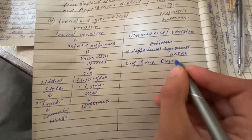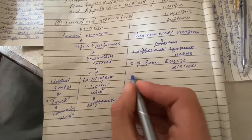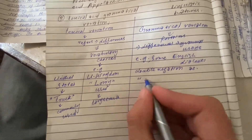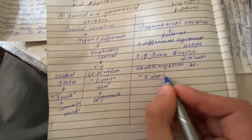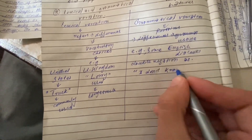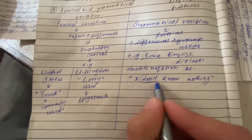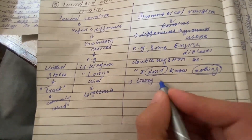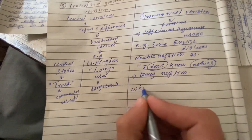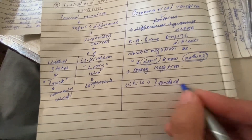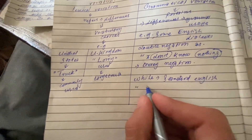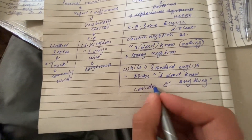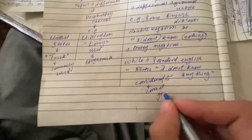Grammatical variation pertains to differences in grammar usage across regions. For example, in some English dialects double negation — as in 'I don't know nothing' — is used to convey negation, while in standard English the phrase 'I don't know anything' is considered grammatically correct.